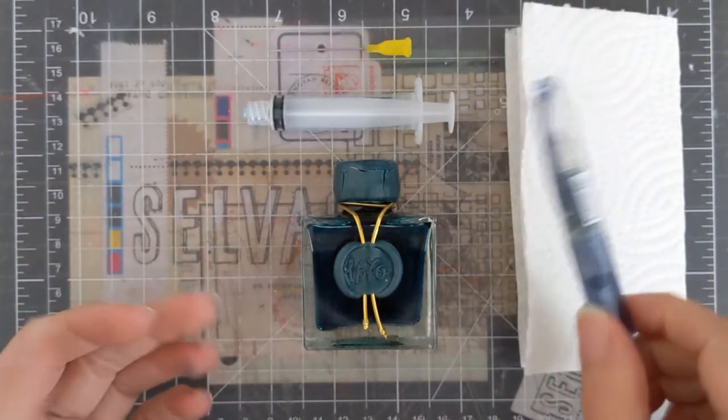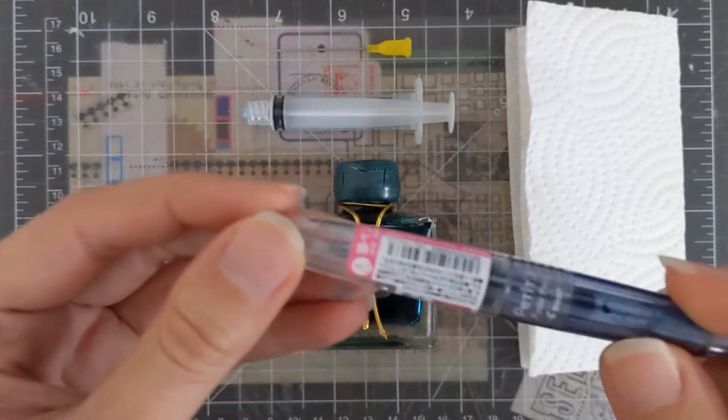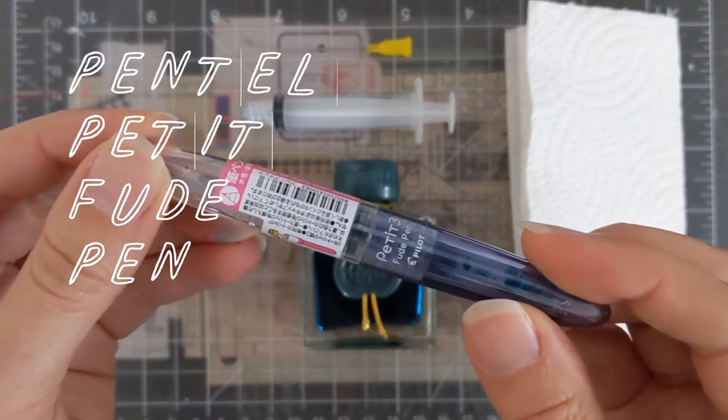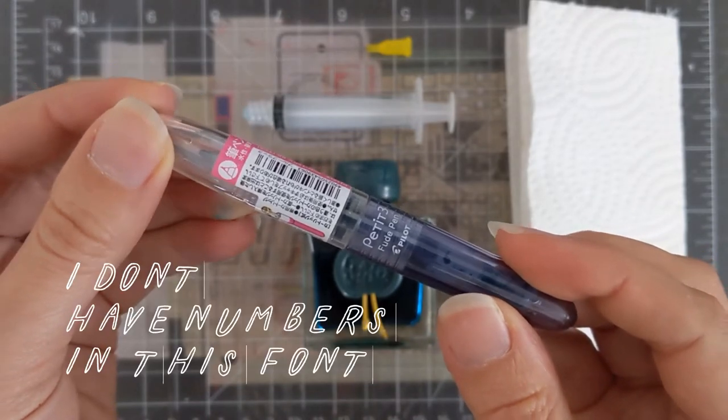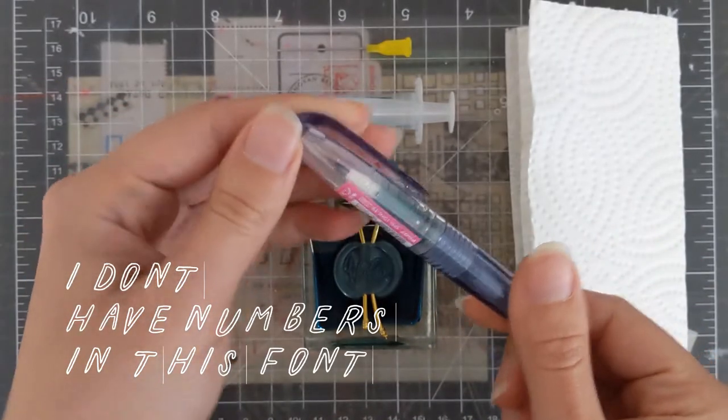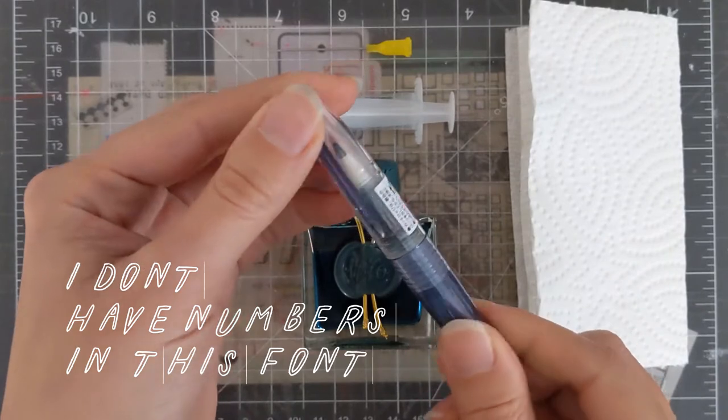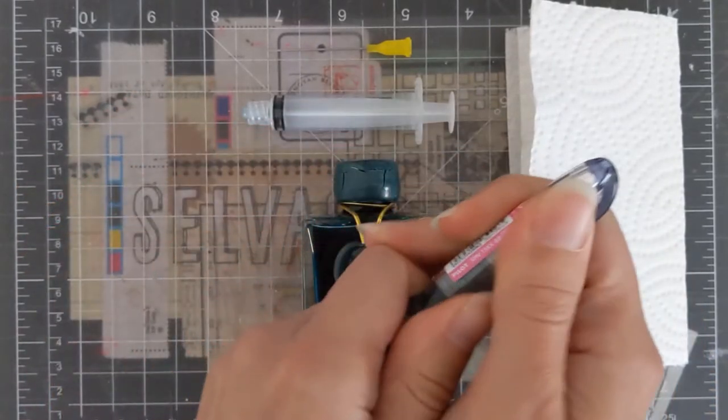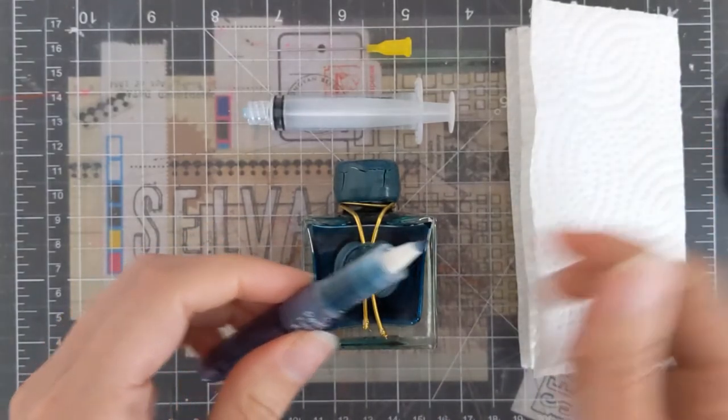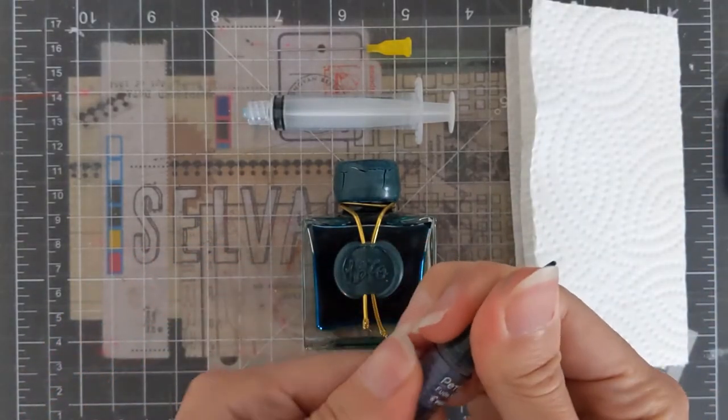But I did find on JetPens this Petite 3 Feud pen, and it is essentially a refillable felt tip. It's a little cheap pen, so I don't feel bad about experimenting with it and giving it a try for certain things.